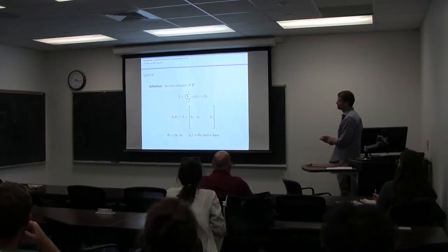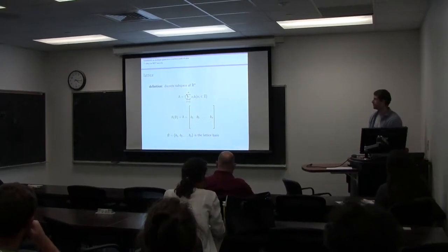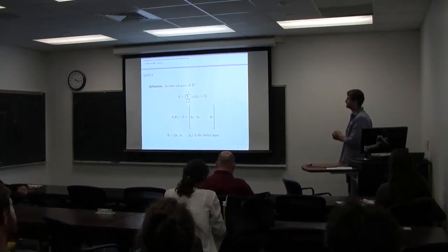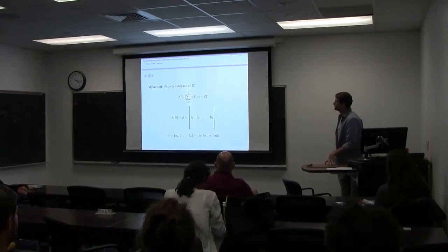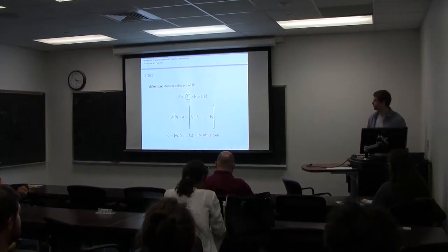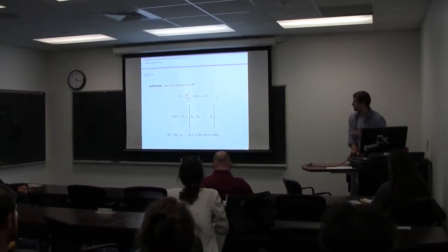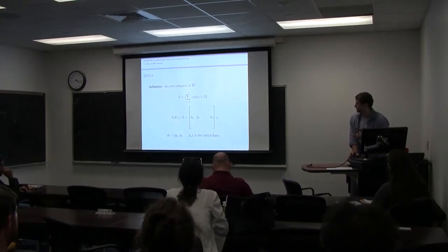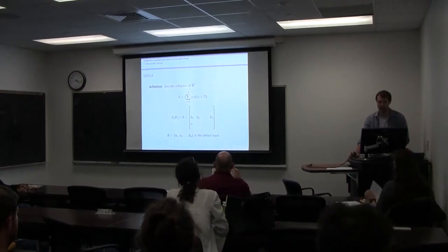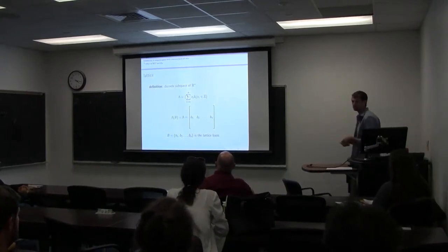A lattice is just a discrete subspace of R^n. If you take any open neighborhood around any point, there is a neighborhood where that point is alone. It's going to be linear combinations of a basis of R^n that have coefficients from the integers. Typically, at least for this lecture, I'll describe them using column notation for lattices. If you see a lattice of this form, just know that B1, B2 are columns of the lattice — these are my lattice bases, and these will generate my lattice.